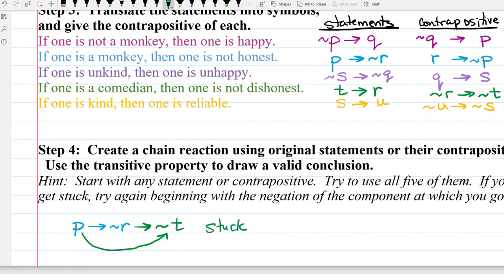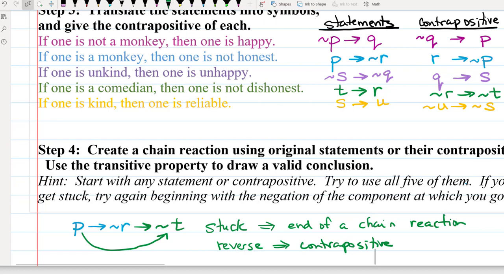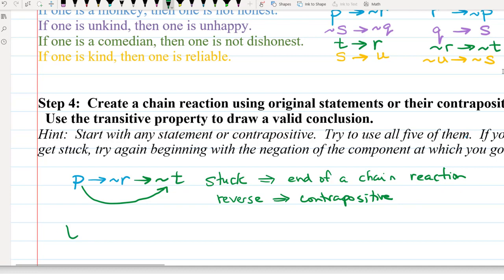So when you get stuck, what that means is you have come to the end of a chain reaction. So if you want to know if that chain reaction was actually longer, if it started way before P, what you can do is look in reverse. In other words, look at the contrapositive. Instead of ending with not T, start with T. So I'm going to start with T.